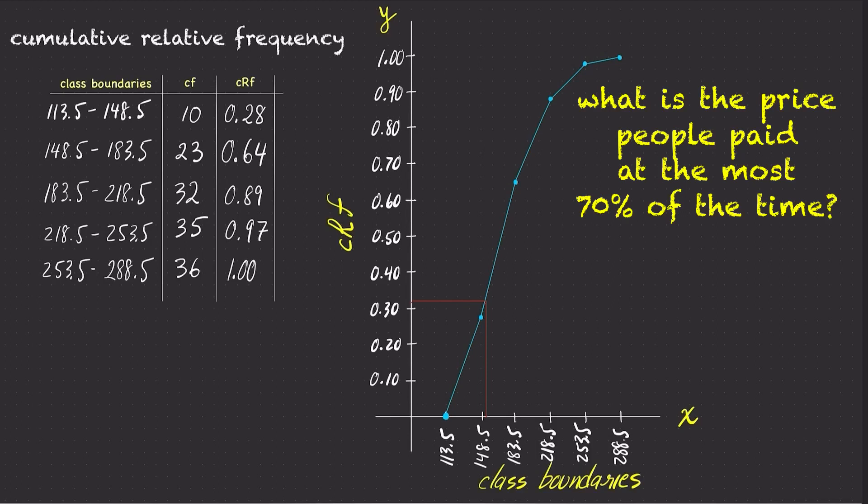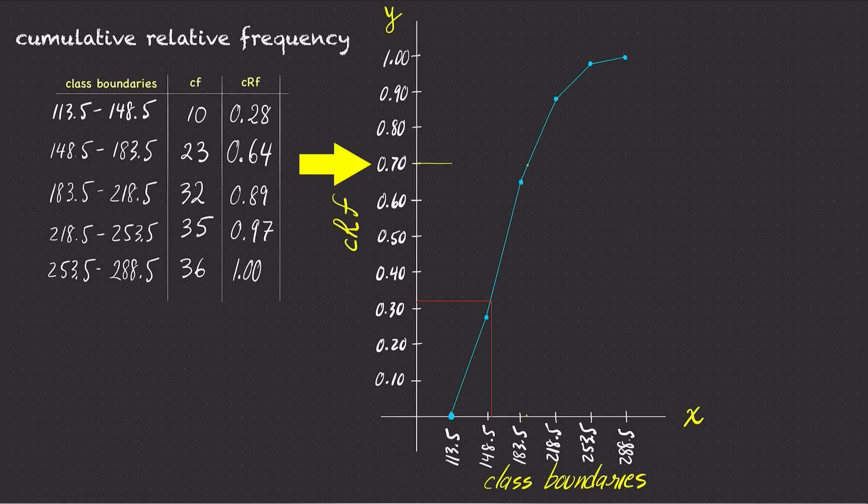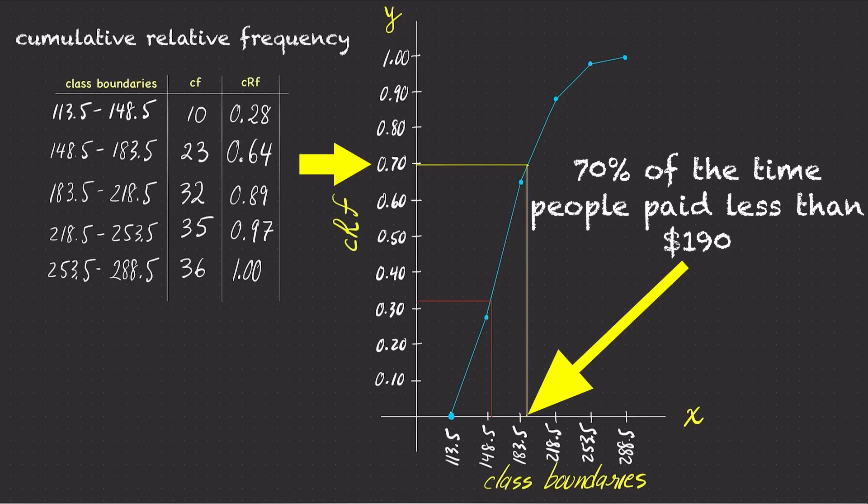If we want to know the health insurance premium that people will pay at the most in 70% of the cases, simply go to the Y axis, draw a horizontal line where 0.70 appears to be until the line reaches the graph, and then draw a vertical line downward from that point until the line reaches the X axis. This is the price where in 70% of the cases, people in the late 20s would pay for the health insurance premium.